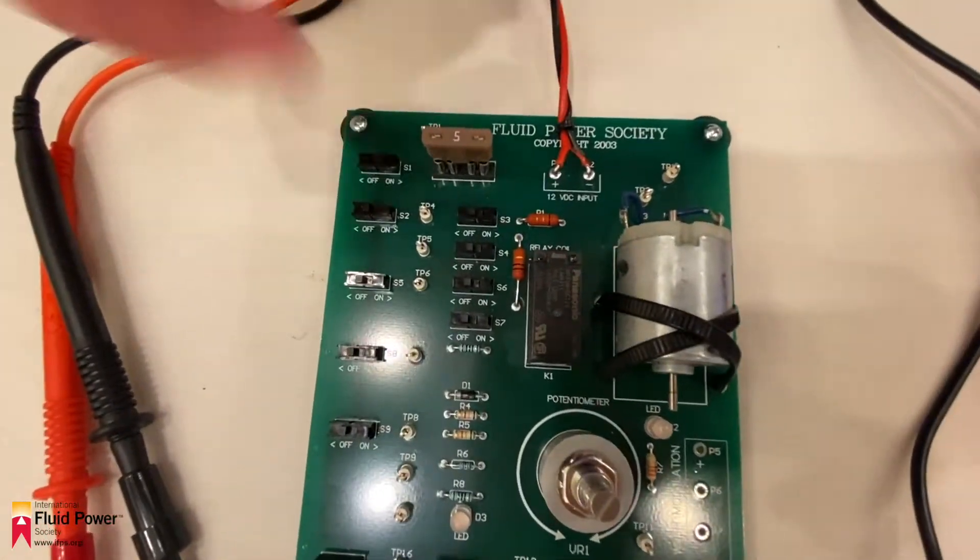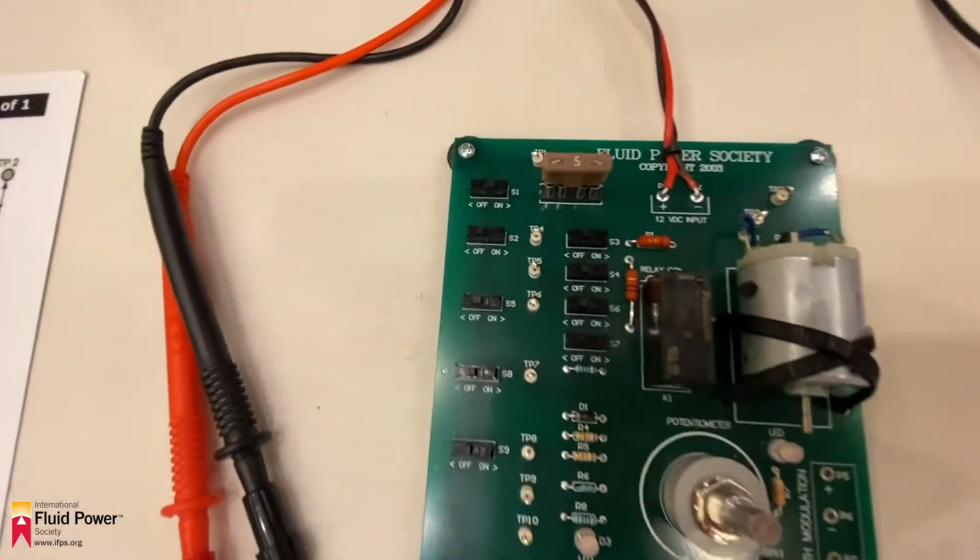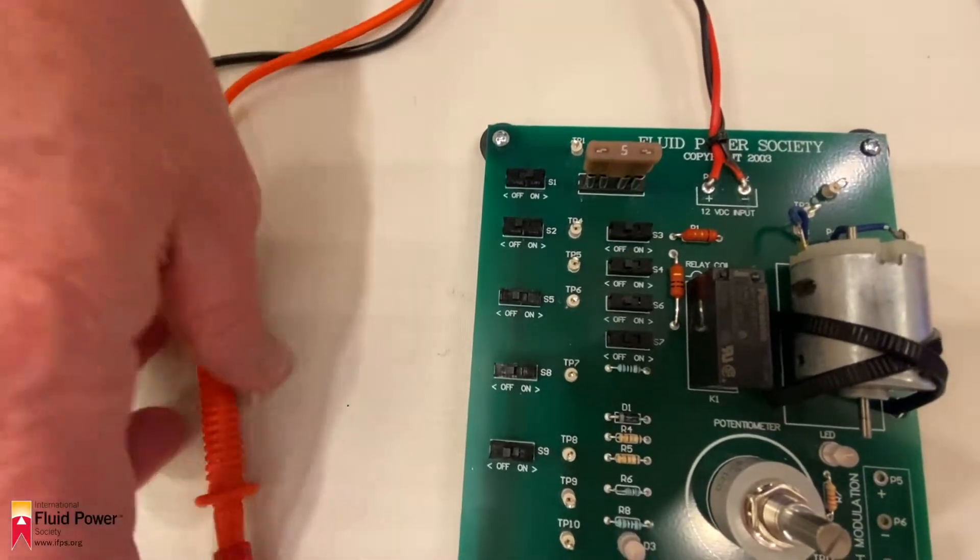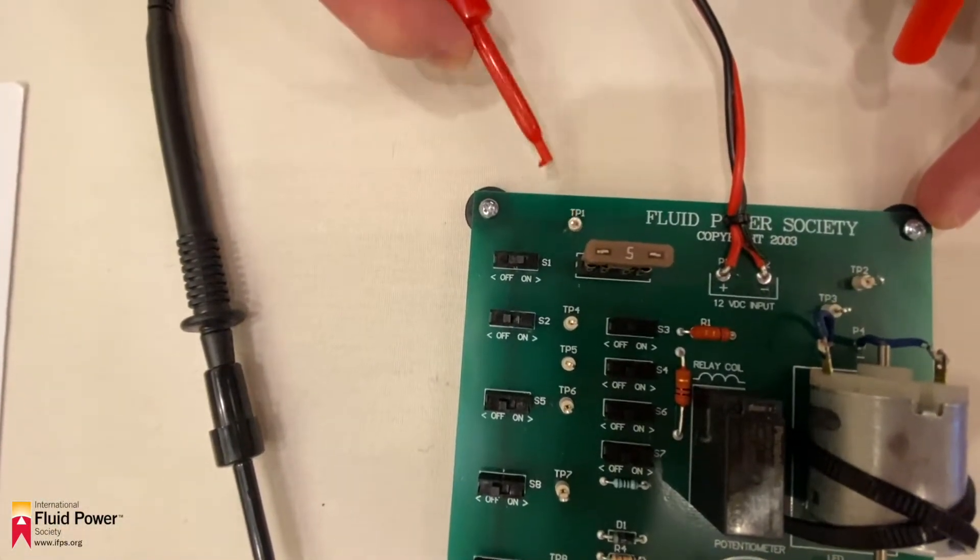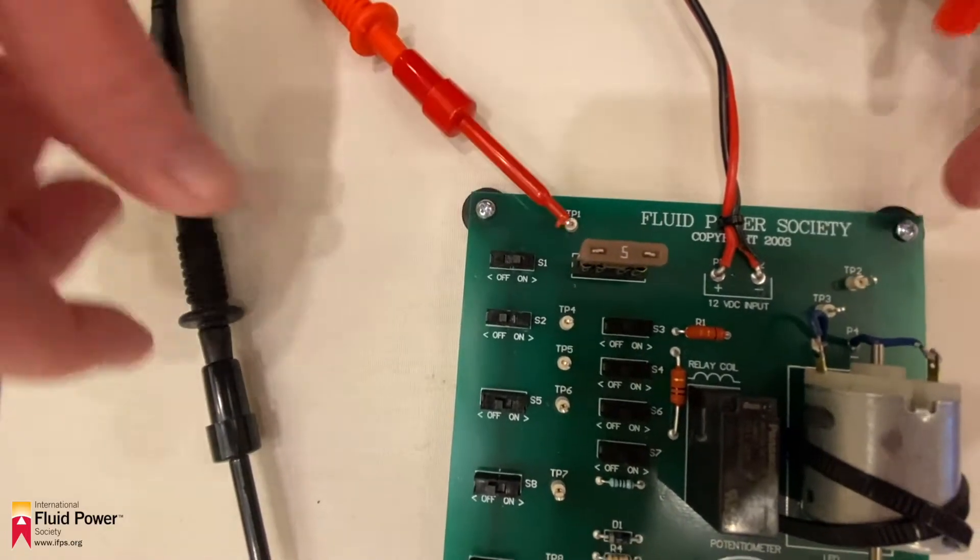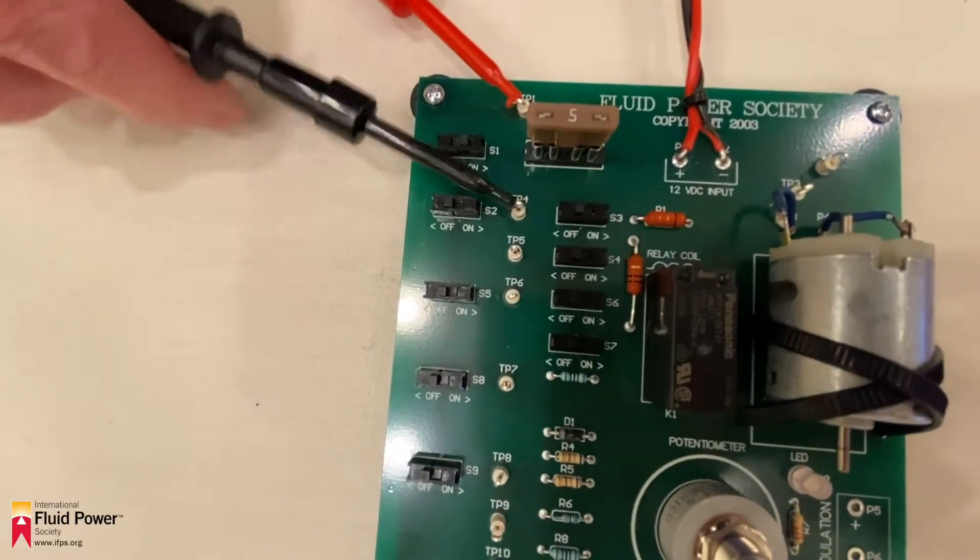Always measure with S1 in the closed position. Always place the red lead of the amp meter on TP1. Always leave the first switch open on the rung of the circuit being tested. Always place the black lead on the first test point after the open switch.